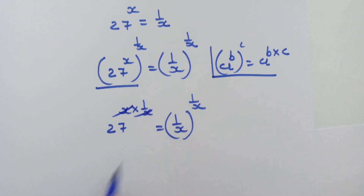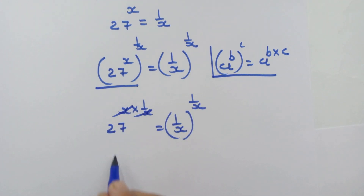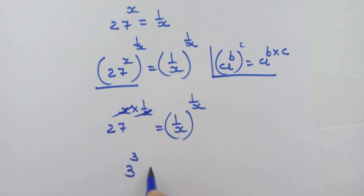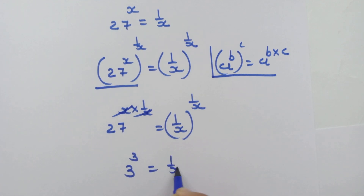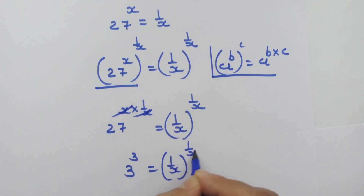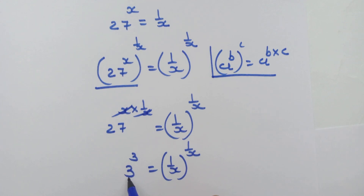The x's cancel, and since 27 equals 3 cubed, we can write 3 cubed is equal to 1 upon x whole raised to 1 upon x. Now we have the same base and exponents on both sides.